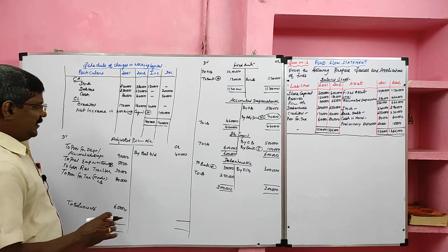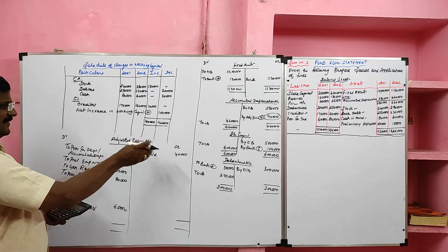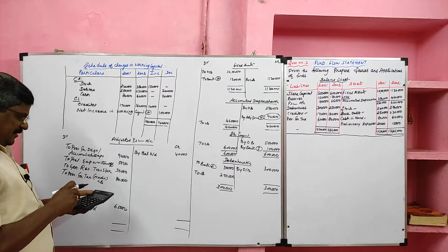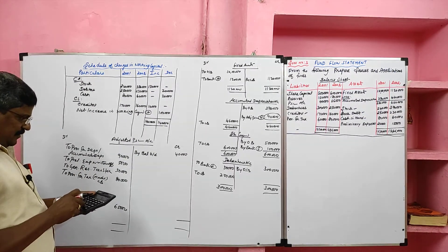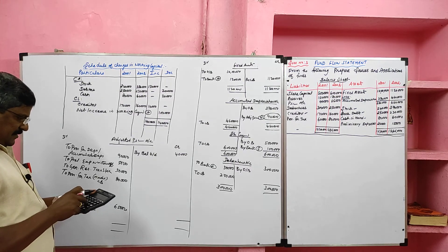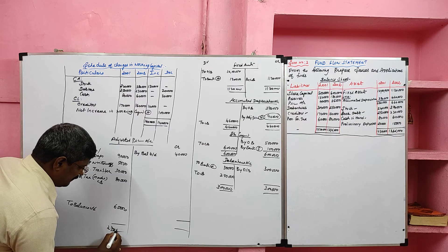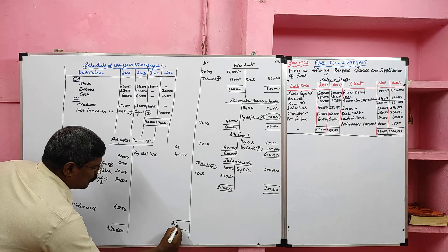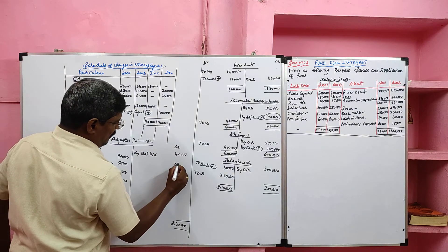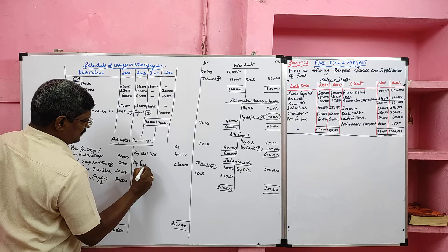Now I am going to total the adjusted P&L account. The debit side exceeds the credit side. Debit side total: 90,000 plus 5,000 plus 30,000 plus 80,000 plus 65,000 equals 2 lakh 70,000. Then 2 lakh 70 minus 40 gives 2 lakh 30,000. This is called funds from operation.